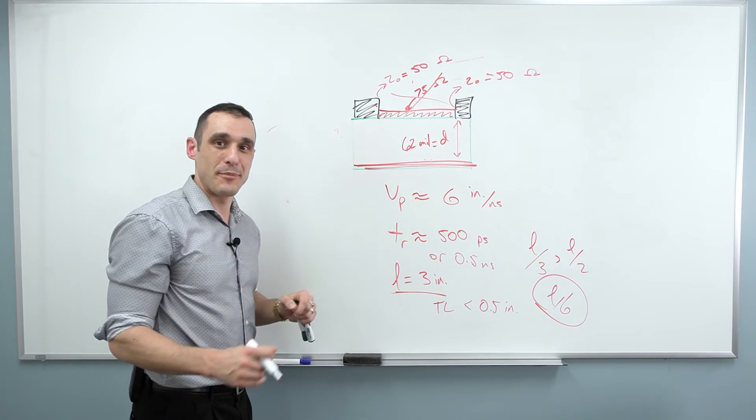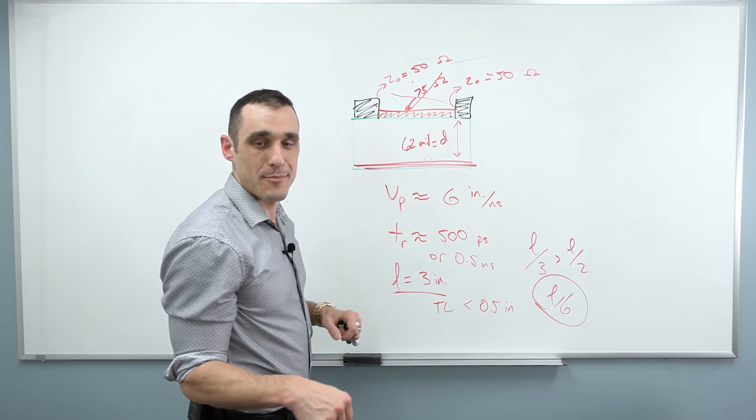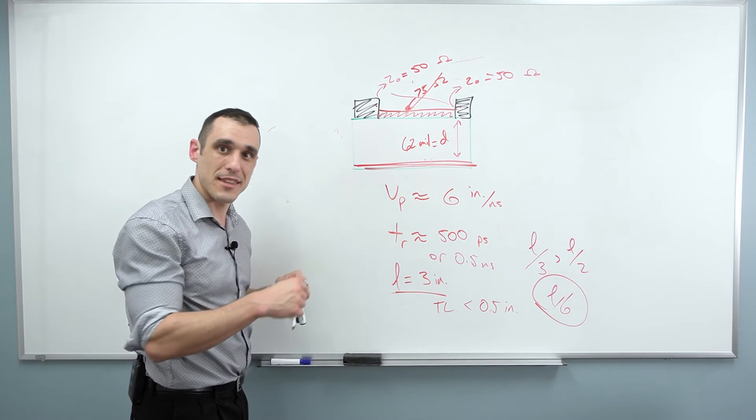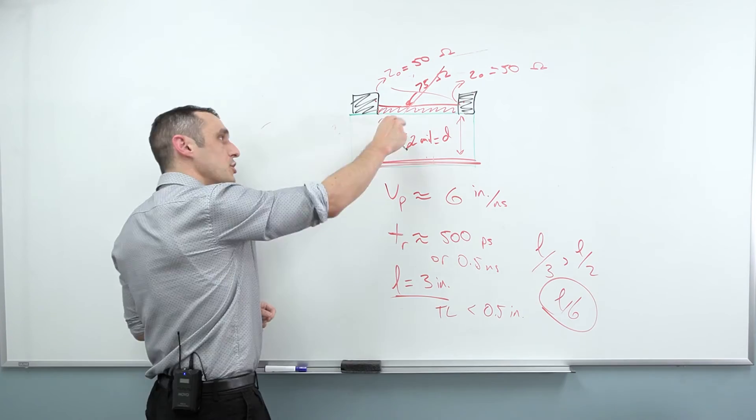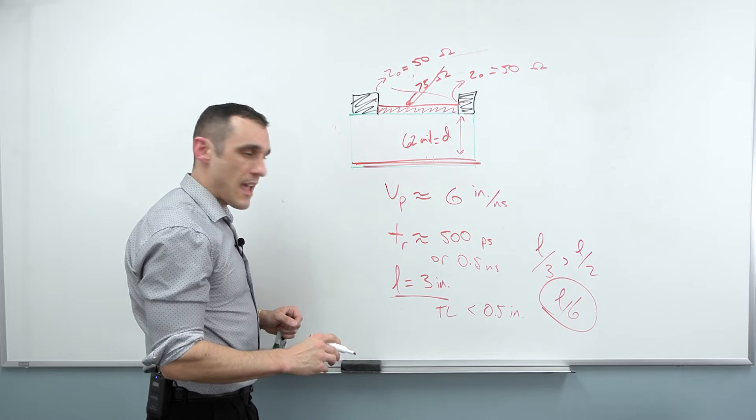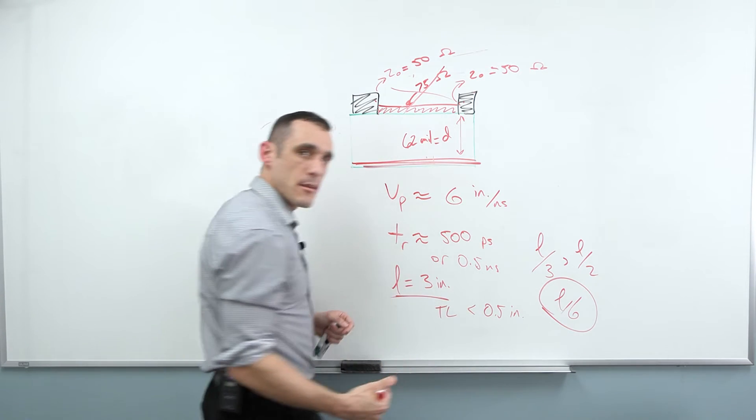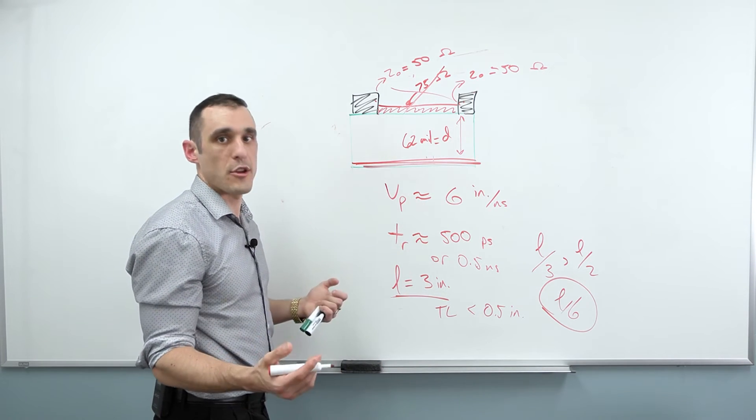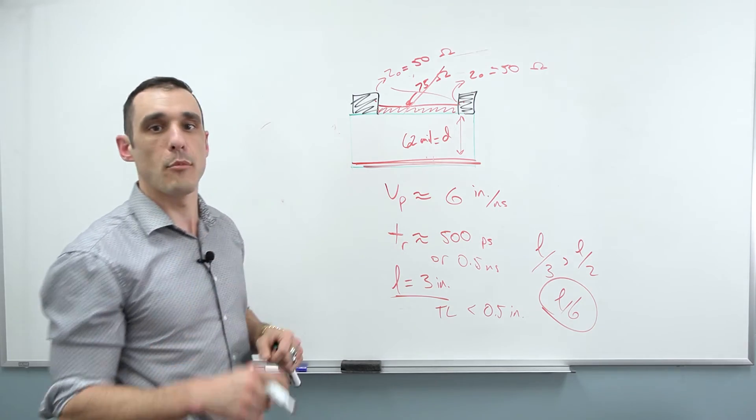because I don't know of any component that is a high-speed digital component that has a hundred mil wide pitch between its pins. So you're not gonna be able to hit that target. You're gonna have to go with thinner traces and you're gonna have to accept one of these length limitations in order to make sure that you can route your board successfully.